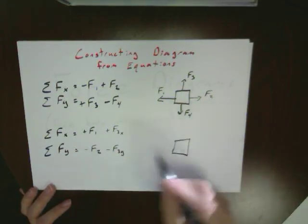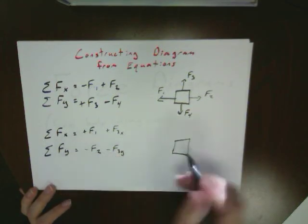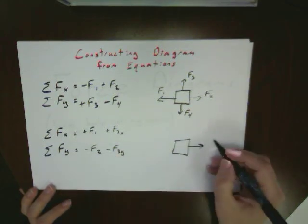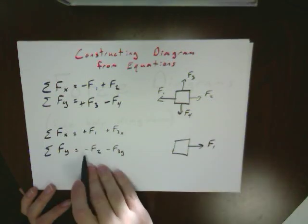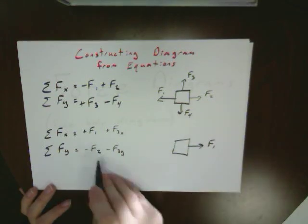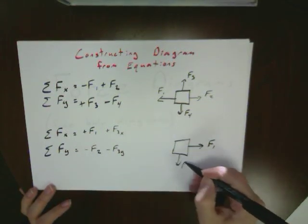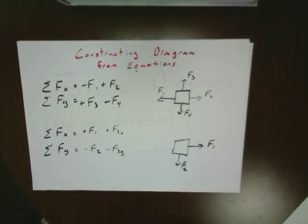f1 is just in the positive x direction, so we can draw that one in here really easily. f2 is in the negative y direction, so that's going to come in here and go in that place.